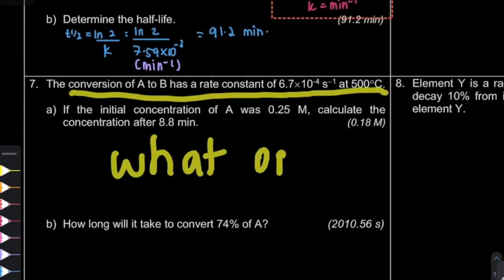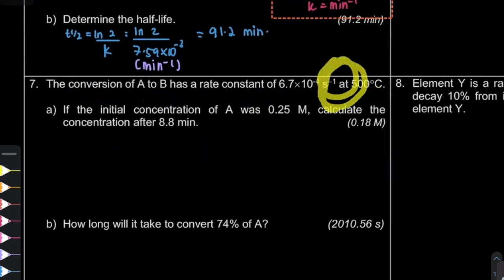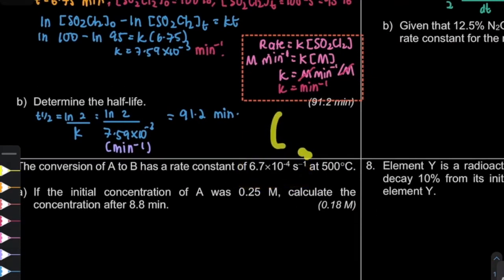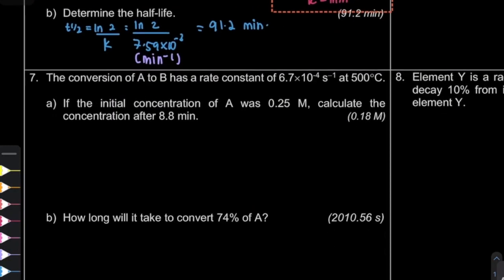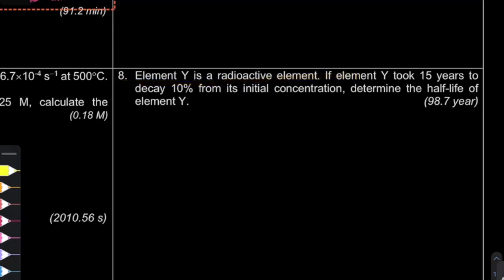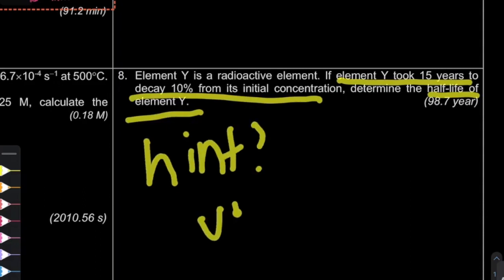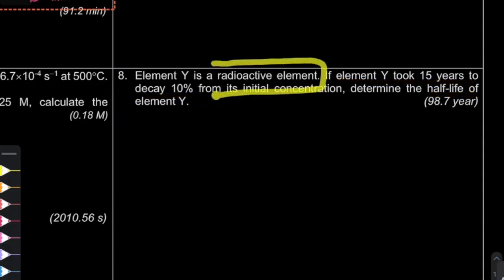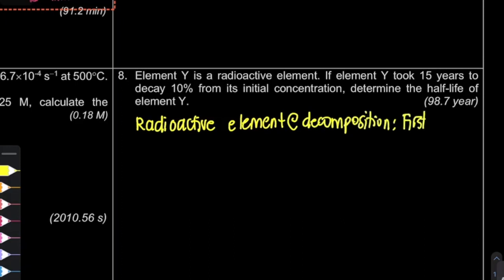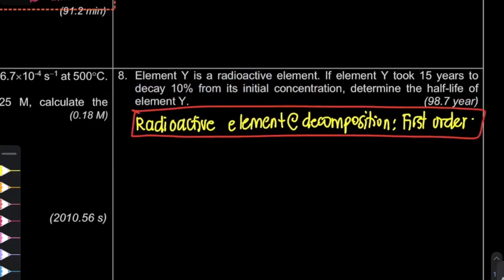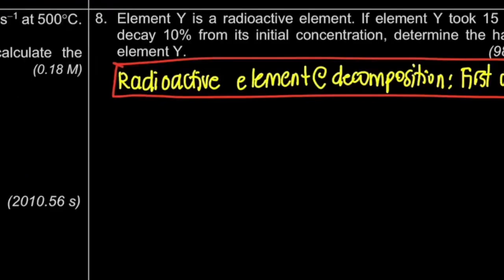For question 7, they don't directly tell you the order of reaction. The hint is the unit of the rate constant — we know that if the unit is per time, it is a first-order reaction. Also remember: if the question involves a radioactive element and does not give you the order, it is always a first-order reaction; it cannot be zero or second order.